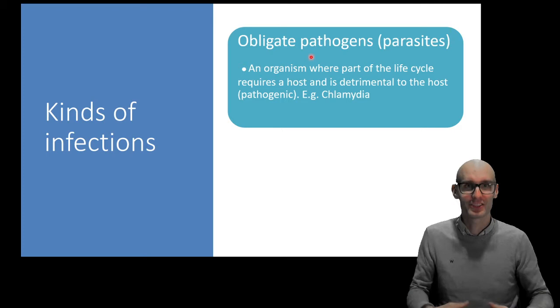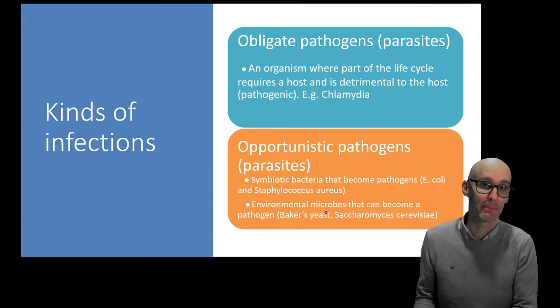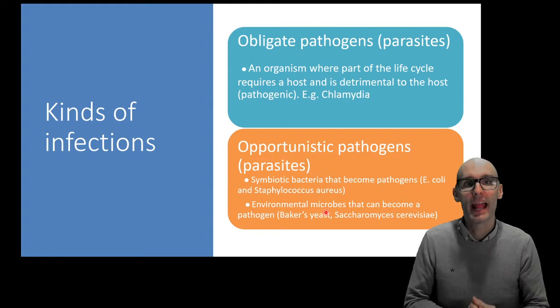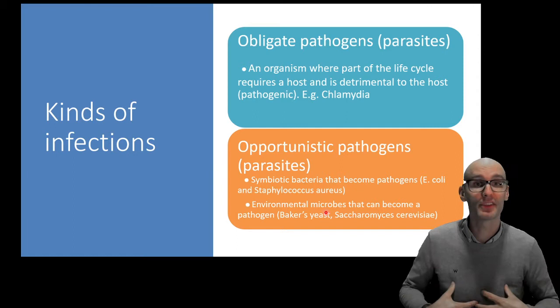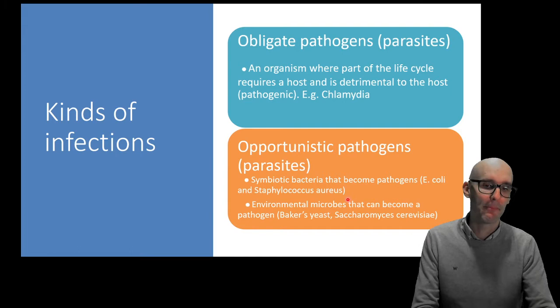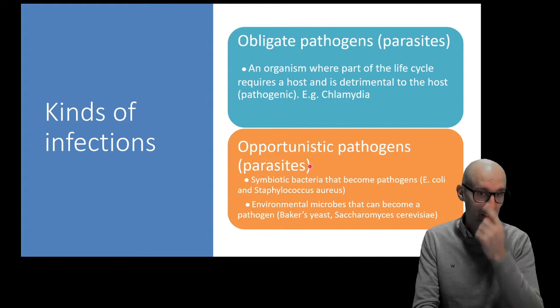Then there are opportunistic pathogens. These guys aren't always pathogens, but if they see the opportunity, they'll become a pathogen. Someone with a suppressed immune system can often be infected by opportunistic pathogens. If you have a suppressed immune system, it's suddenly very easy for an organism to infect you. Even though it doesn't have to, it will and cause a pathogen.